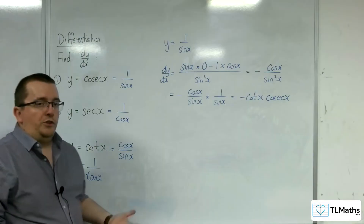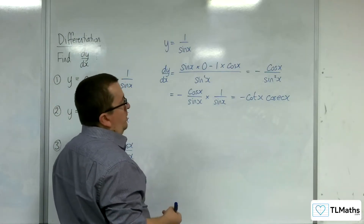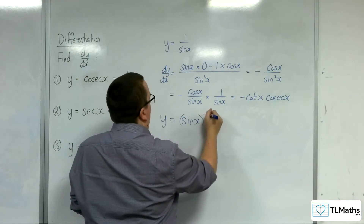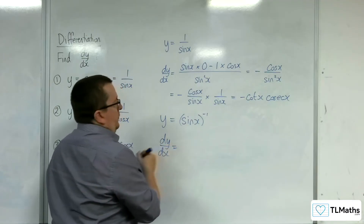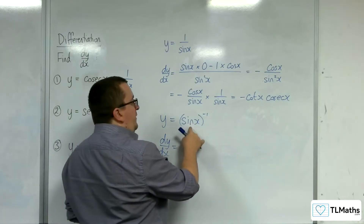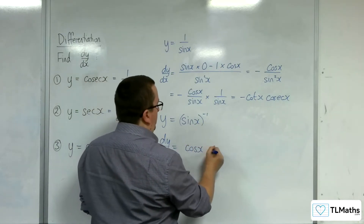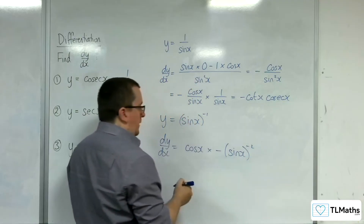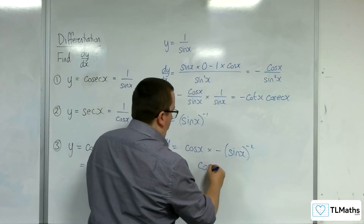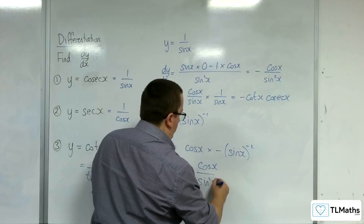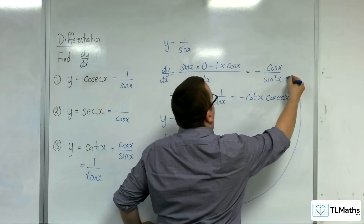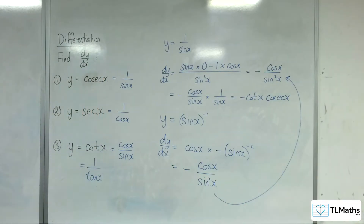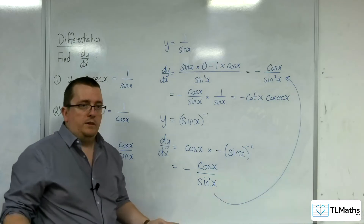So, 1 over sine x differentiates to minus cot x cosec x. Now, you could alternatively have used the chain rule. If we write it as y equals sine x to the minus 1, using the chain rule, the derivative of what is inside comes outside — so that's cosine x. The minus 1 comes down to the front and then you take 1 from the power, giving minus cosine x over sine squared x, which is precisely the same result. So it's really up to you which method you use here.